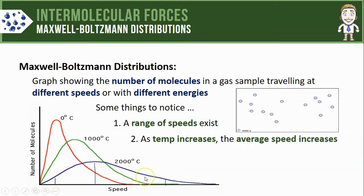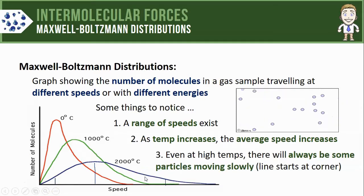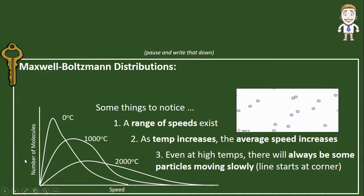Lastly, even at high temperatures there will always be some particles moving slowly. This is helpful in case you ever have to draw a distribution curve yourself. The line always has to start at the bottom left-hand corner. These three things make up some of the important key ideas related to these distribution graphs. Make sure you take some time and write them down.